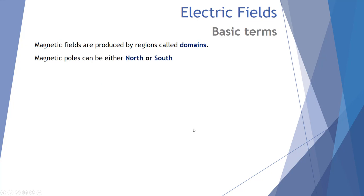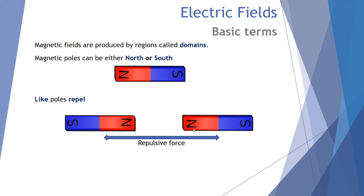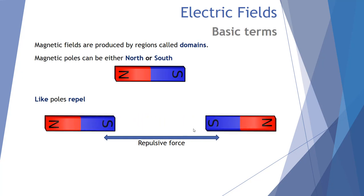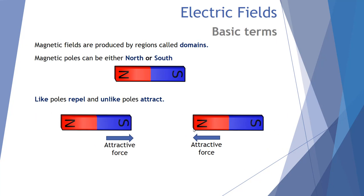We know that magnetic poles can either be north or south — like a traditional looking bar magnet. Like poles repel: place two north ends together and they push away, or two south ends. And of course unlike poles attract, so north and south you'll feel a force pulling those two ends together.